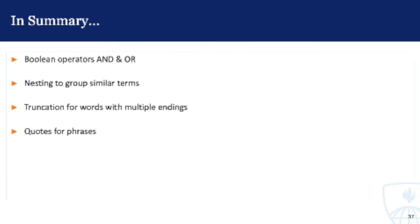In summary, using Boolean operators, nesting, phrase searching, and truncation will put you on the right path for finding relevant results in PubMed. There are other search techniques that you can incorporate, but understanding how and when to use these four techniques is crucial to building an effective and efficient PubMed search.